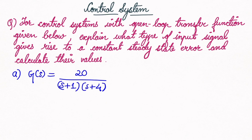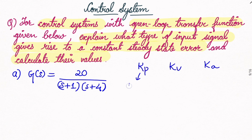In this video we are going to understand a control system with open loop transfer function G(s)·H(s). Since it is a unity feedback system, H(s) is not mentioned. The question asks: what type of input signal gives rise to a constant steady state error, and what are their values? There are three error constants: Kp (position error), Kv (velocity error), and Ka (acceleration error).